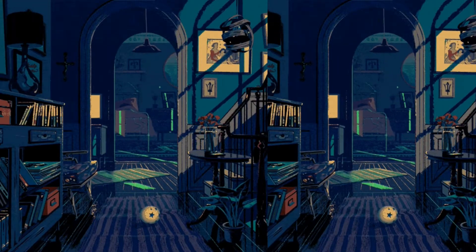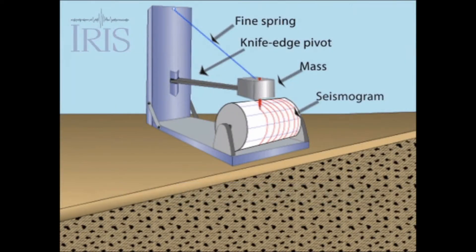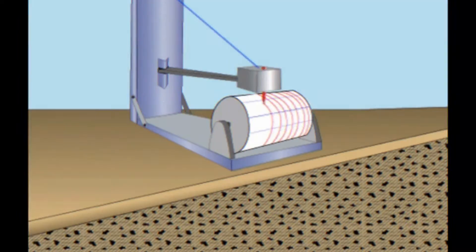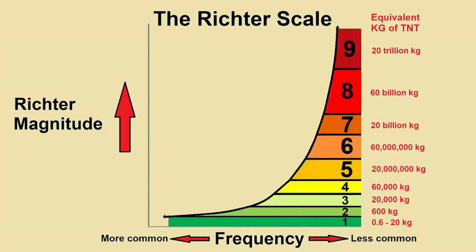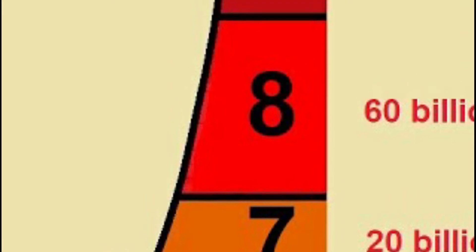An earthquake is measured on the Richter scale. A seismometer detects the vibrations caused by an earthquake and plots these vibrations on a seismograph. The strength or magnitude of an earthquake is measured using the Richter scale. Quakes measuring around 7 or 8 on the Richter scale can be very devastating.